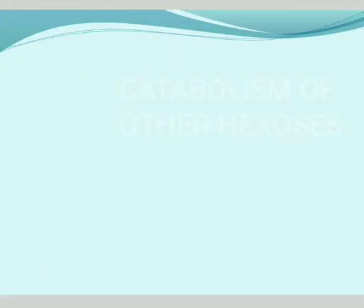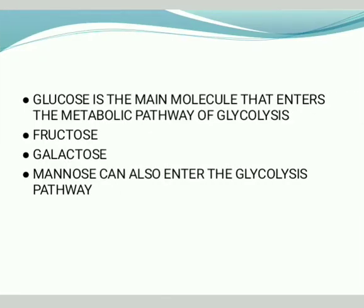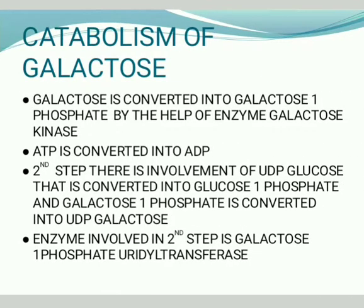Today the topic of our discussion is catabolism of other hexoses. Hexoses are sugar molecules which contain six carbon atoms. Glucose is the main molecule that contains six carbon atoms and it undergoes the metabolic pathway of glycolysis. In addition to glucose, fructose, galactose, and mannose can also enter the glycolytic pathway.